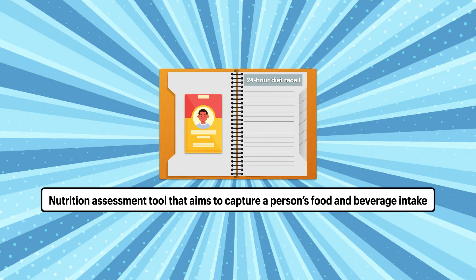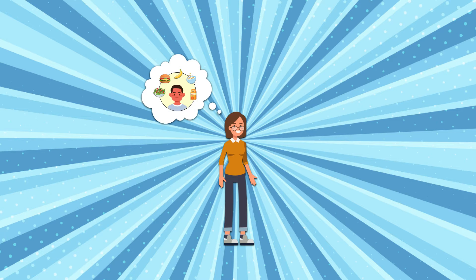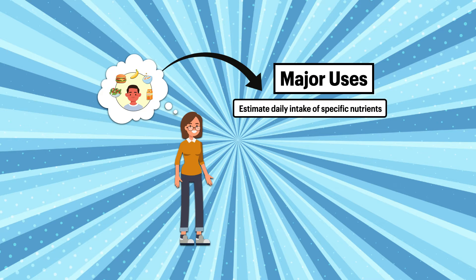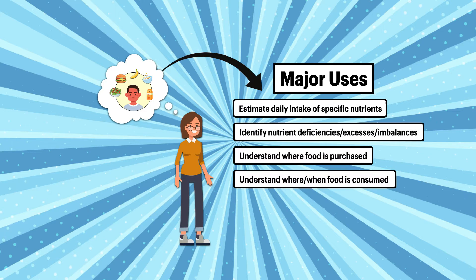The 24-hour diet recall is a nutrition assessment tool that aims to capture a person's food and beverage intake. It's typically used as a way for a dietician to get an idea of what a patient eats, which can be used to estimate daily intake of specific nutrients like energy, protein, and water, identify nutrient deficiencies, excesses, or imbalances, and understand where food is purchased and where and when it's consumed.